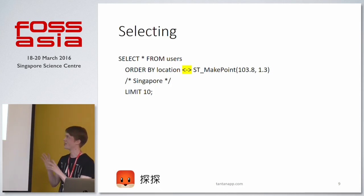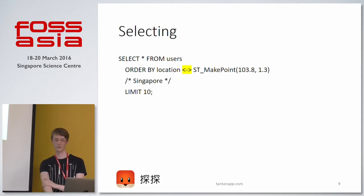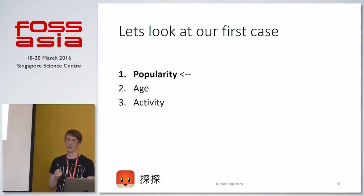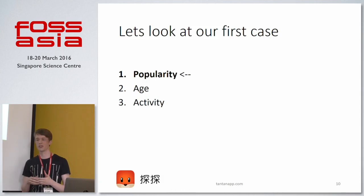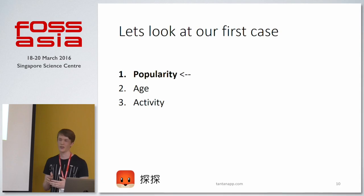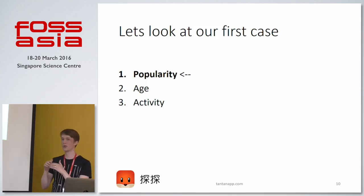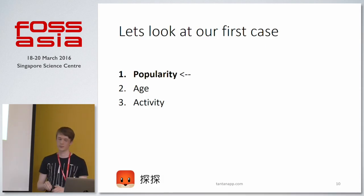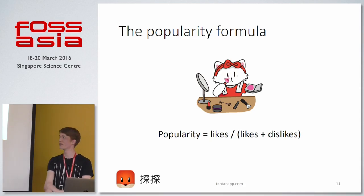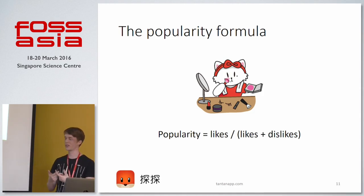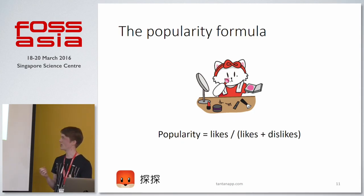That sets the ground for my examples. Let's start with the first case: popularity. At Tantan we think that more popular users are better users in our system, and our research has shown it's better to make popular users a little bit more popular by ranking them higher so they are shown earlier. We define popularity as the number of likes divided by the number of likes plus dislikes. So if you have 10 likes and 0 dislikes your popularity is 1, and if you have 0 likes and 10 dislikes your popularity is 0.